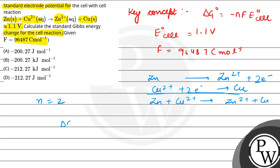So delta G⁰ is equal to minus 2 times 96,487 times 1.1. So this will be minus 212,271.4 joule. If we do it in kilojoules, that will be minus 212.271 kilojoules per mole.